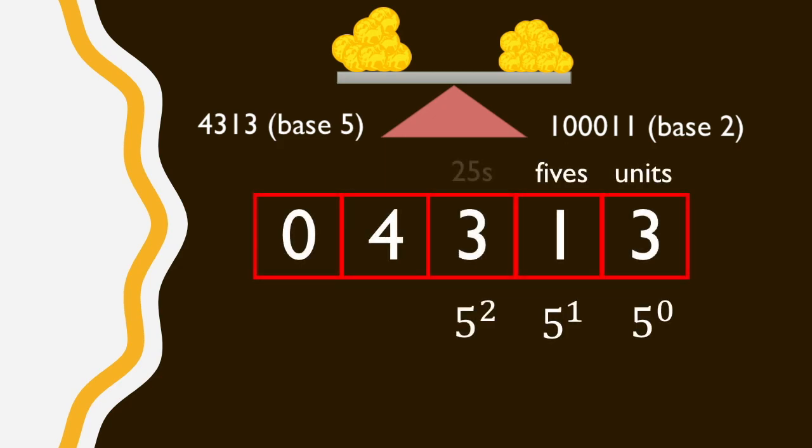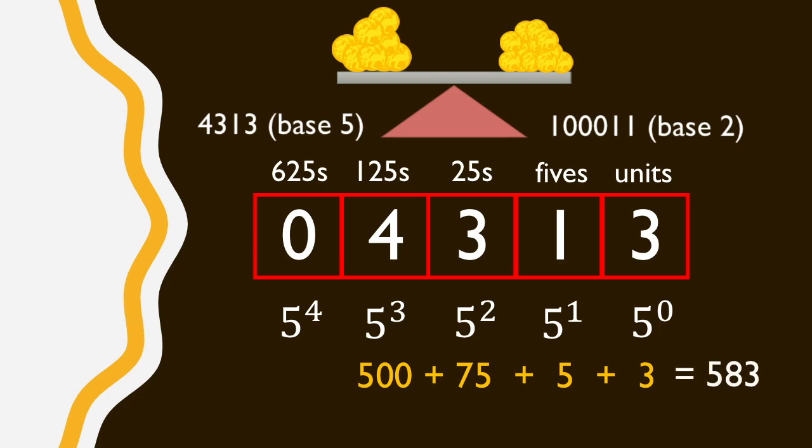Let's have a look by converting. 4, 3, 1, 3 in base 5 means 4 times 5 cubed plus 3 times 5 squared plus 1 times 5 to the 1 plus 3. And multiplying out gives 4 times 125 plus 3 times 25 plus 5 plus 3, which equals 500 plus 75 plus 5 plus 3 equals 583.